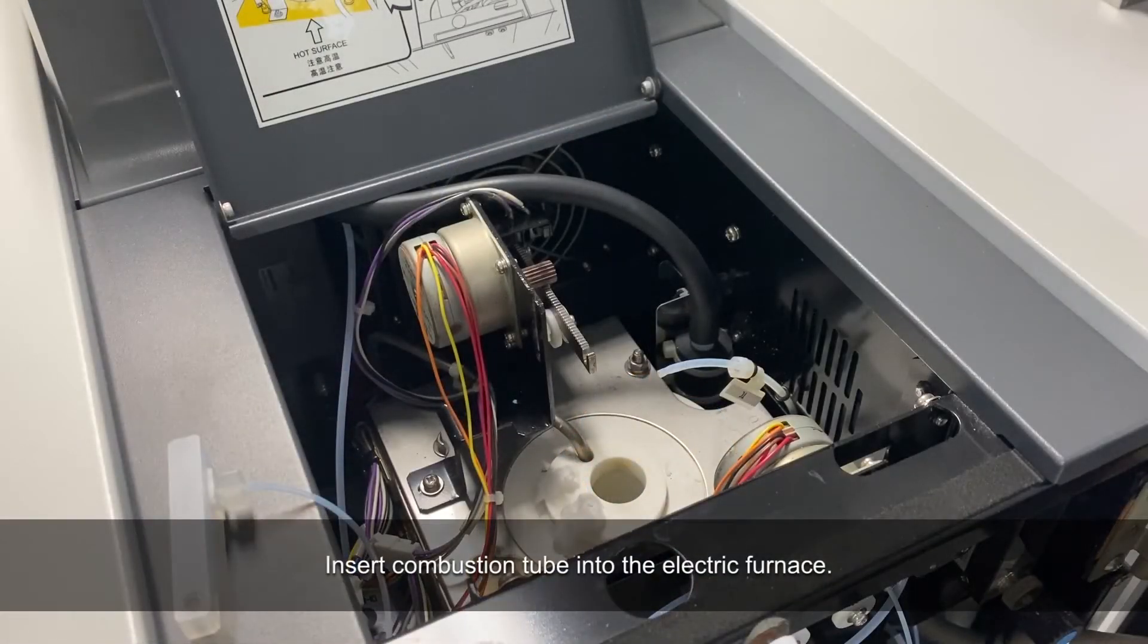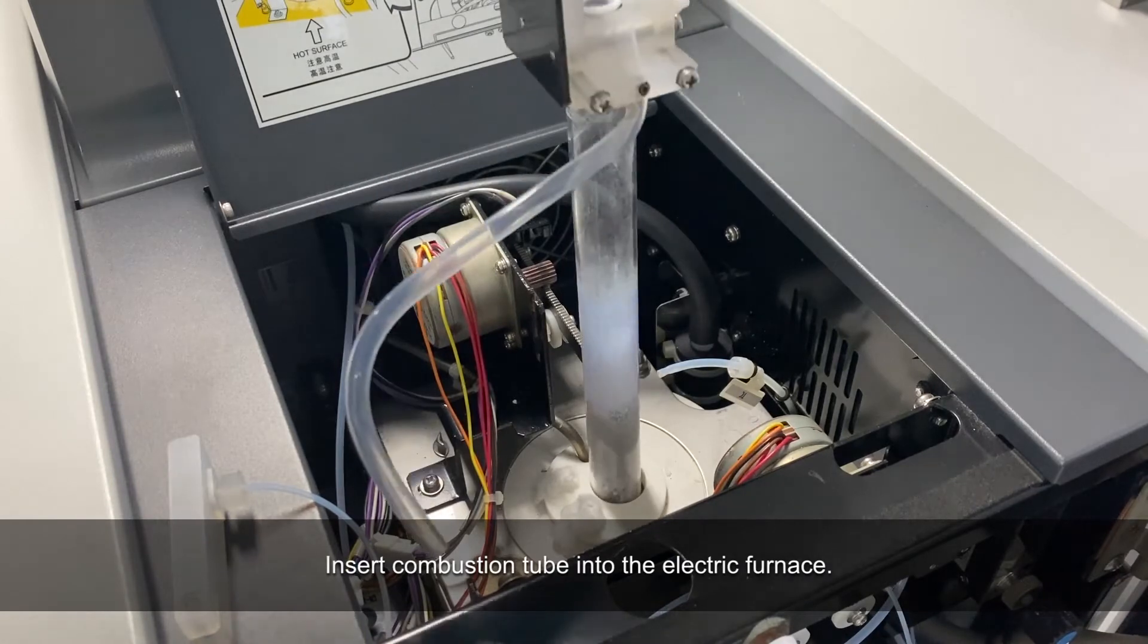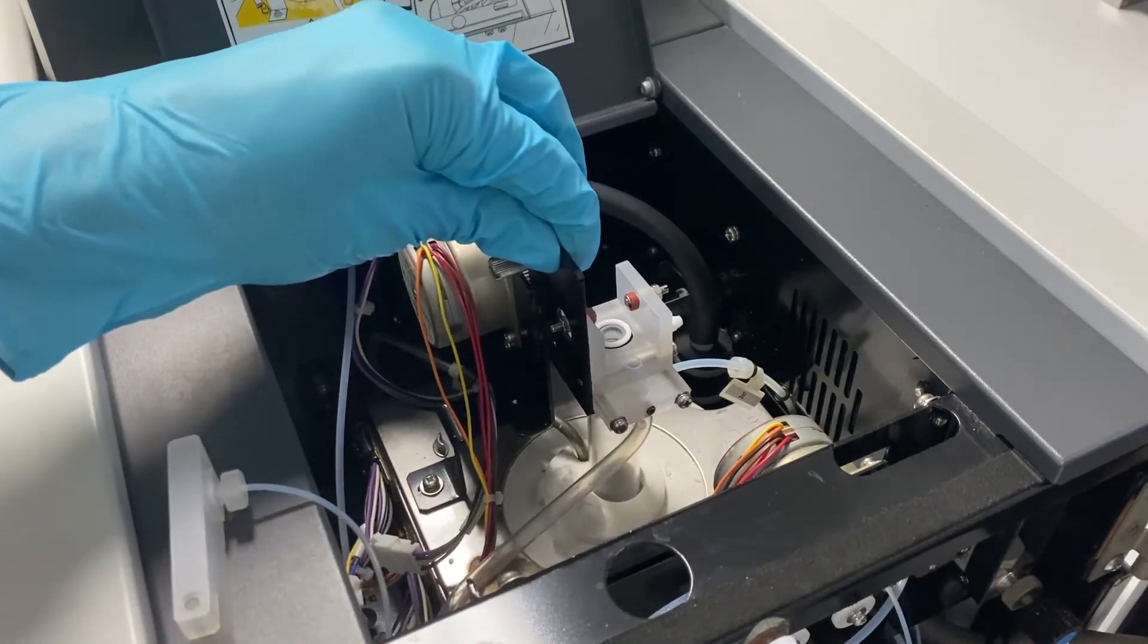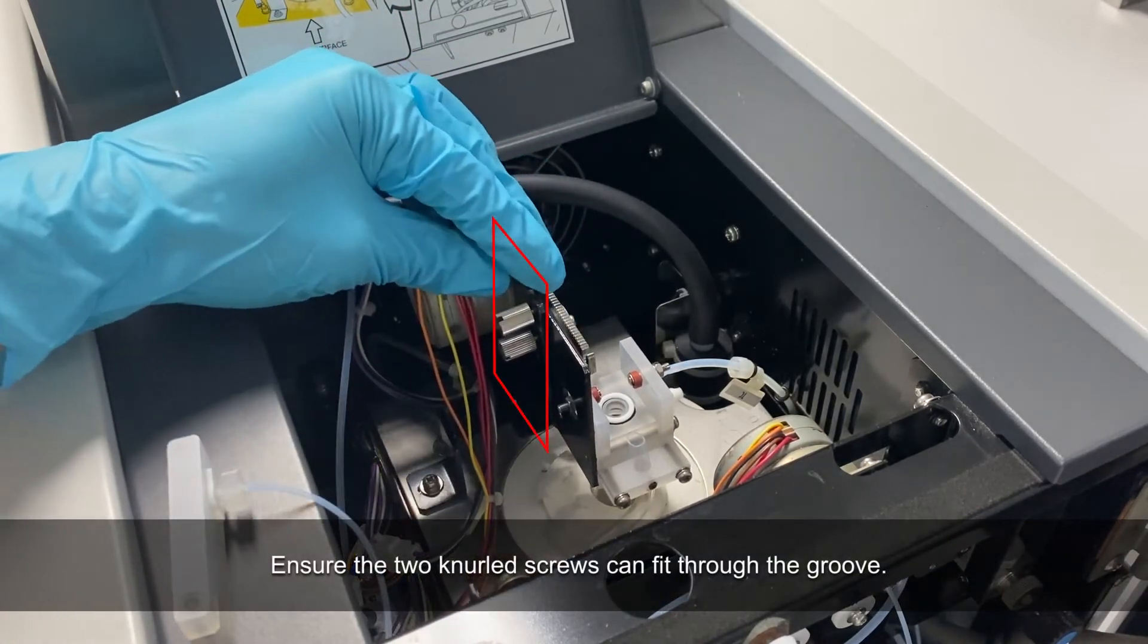To place back the combustion tube, insert the tube into the electric furnace. Ensure the two screws are able to fit properly through the groove.